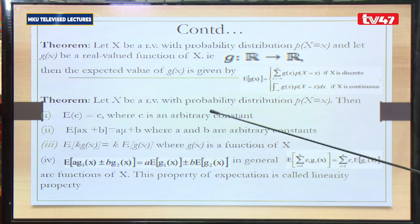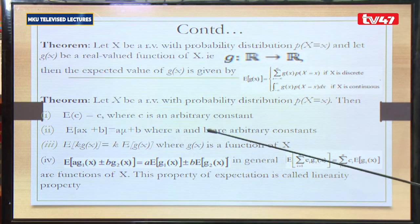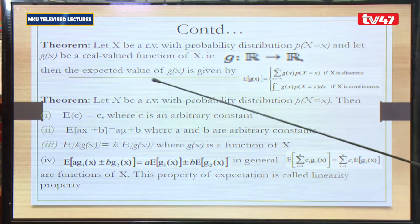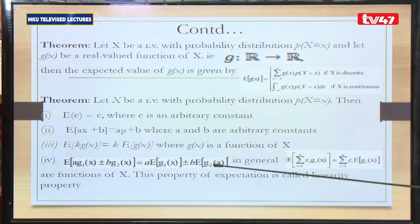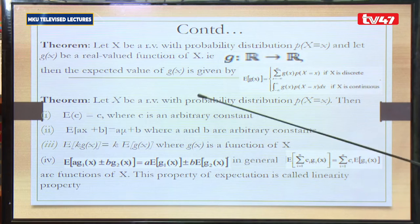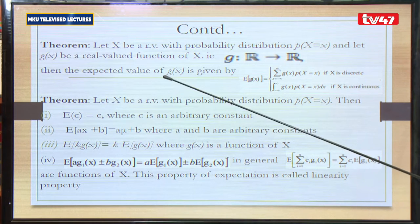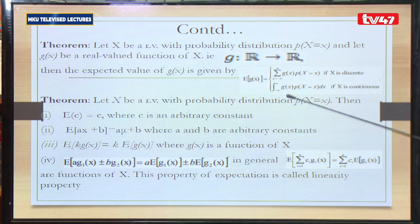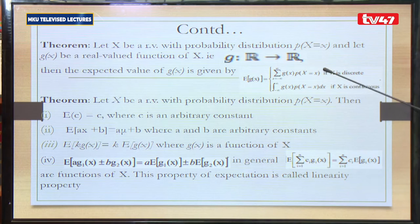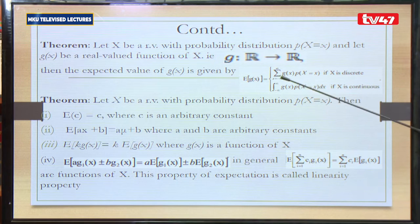We have a theorem: if x is a random variable with probability p(x), and g(x) is a real-valued function that takes values from the set of real numbers to the set of real numbers, then the expected value of g(x) is simply obtained by replacing x with g(x) in the previous expression, giving the summation of g(x) times p(x) for discrete and the integral of g(x) times p(x) for continuous.